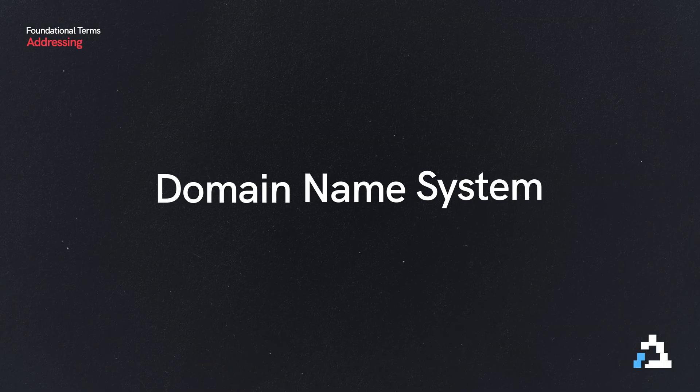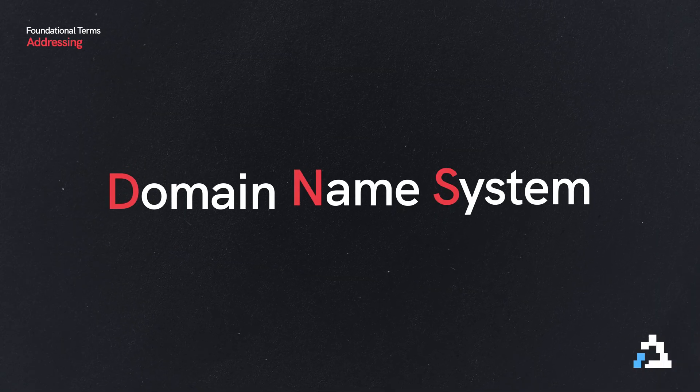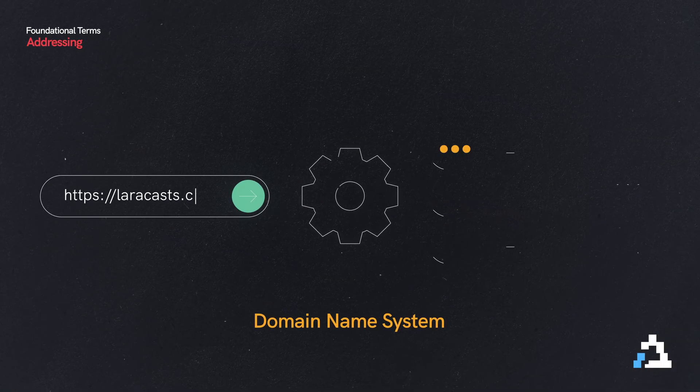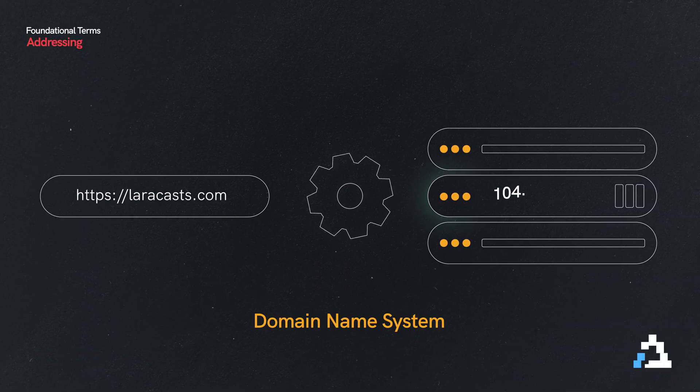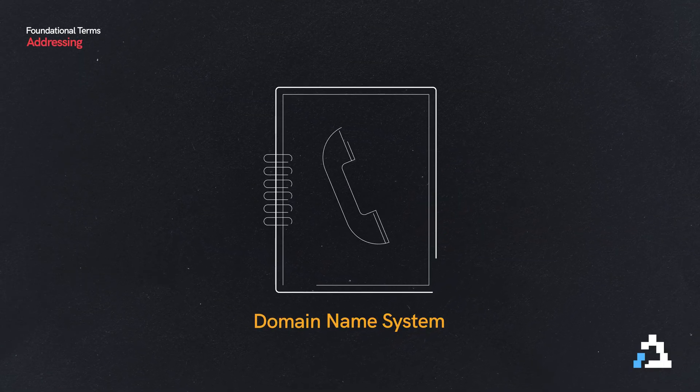But of course, who wants to type out that IP address? Who wants to even try to remember that in order to go to Google's homepage? No one does. So instead, what we have is called DNS — it stands for Domain Name System — and it essentially translates a human-readable name to a machine-readable IP address. So in a lot of ways, you can think of it as a phone book.